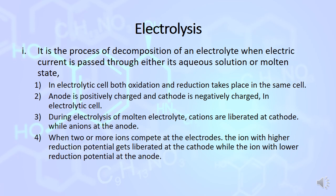If there are two or more ions competing at one electrode, the ion with higher reduction potential gets liberated at the cathode, while the ion with lower reduction potential gets liberated at the anode.